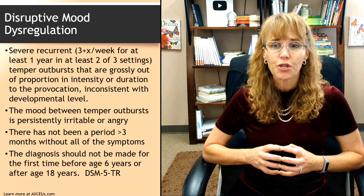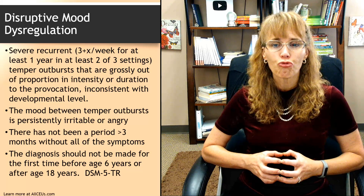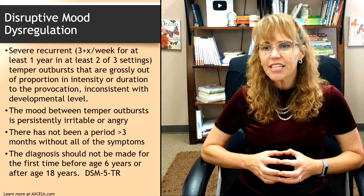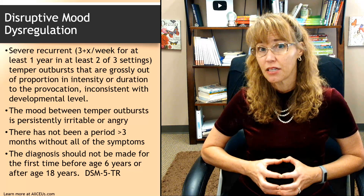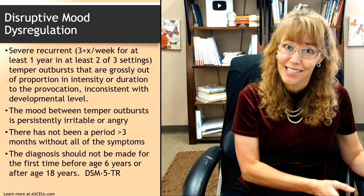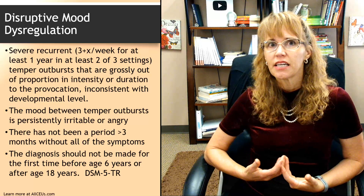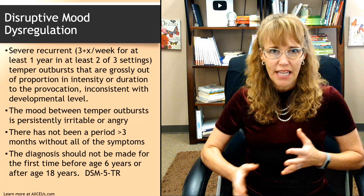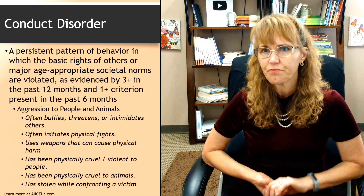With disruptive mood dysregulation disorder, the mood between temper outbursts is persistently irritable or angry, with no period greater than three months without all of the symptoms. The diagnosis should not be made for the first time before age six or after age 18. Remember, ODD often appears in preschool years, well before age six, so if you're not seeing the child until after six, you need to look very carefully at differential diagnosis.